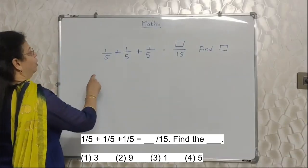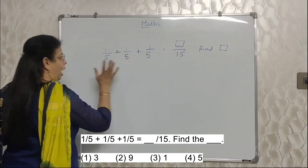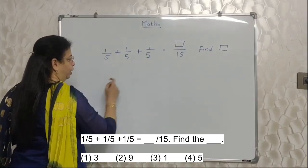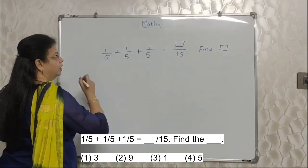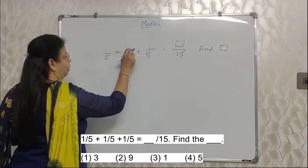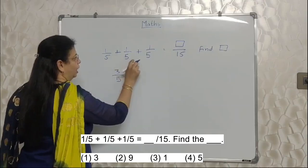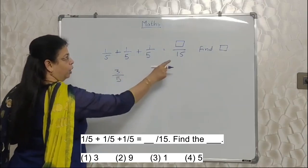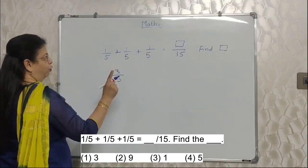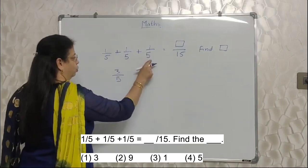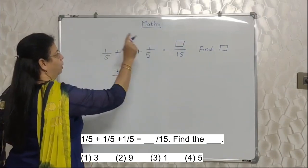Very easy. Whatever numbers are available, we will add them first. Here they are like fractions with the same denominator, so our job is very easy. We have to just add the numerators. 1 plus 1 plus 1, 3 upon 5 is the answer. Please don't add this and do 15 here looking at this 15. Please be careful. Denominator add nahin hota hai, it is same, so it will remain same. Only the numerators will be added.